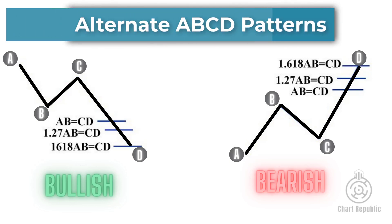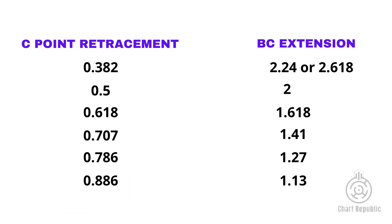In an ABCD structure, the C point is a defining level for guessing the completion of the pattern at point D, although the BC extension is also crucial in this structure. This table contains all the ratios inside the ABCD pattern to help us identify our D point.